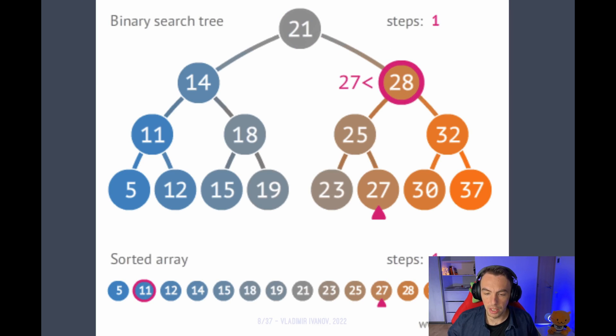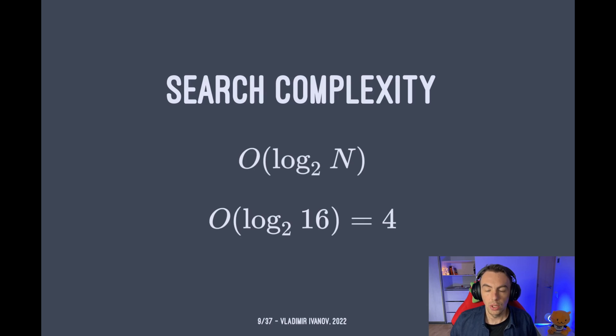Here in the bottom, you can see that in order to find a value of 27 in the sorted array of 16 elements, we need to take 10 steps. In contrary, in a binary search tree, we only need four steps and four comparisons in order to find our element. Thus, the binary search tree is much more efficient in terms of searching for a value, hence the name. If we take this formally, then the search complexity of finding an element in a binary search tree will be the logarithm with the base of 2. So logarithm of 16 with the base of 2 is 4, and this is exactly the number of steps that we took to find our element in the previous example.